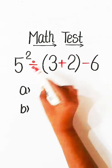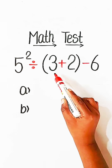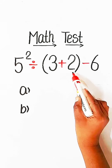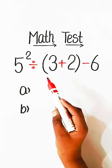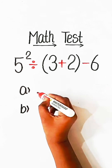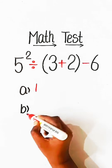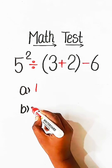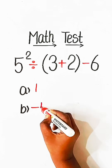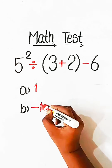Math test: 5 squared divided by under bracket 3 plus 2, minus 6, equals to what? Option A: 1. Option B: minus 1. Comment your answer.